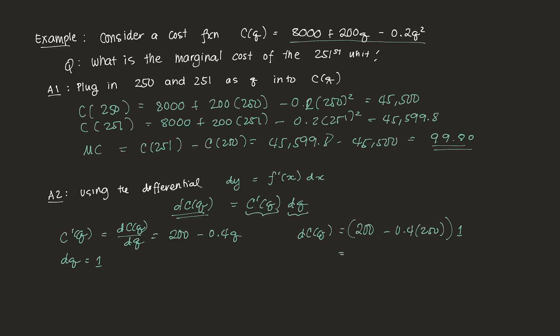That gives us 200 − 0.4×250 = 200 − 100 = 100. So the differential estimates that the marginal cost of producing the 251st unit is about 100 units of currency, say $100. Note that there is a difference — the true marginal cost is 99.80 and the estimated one is 100.